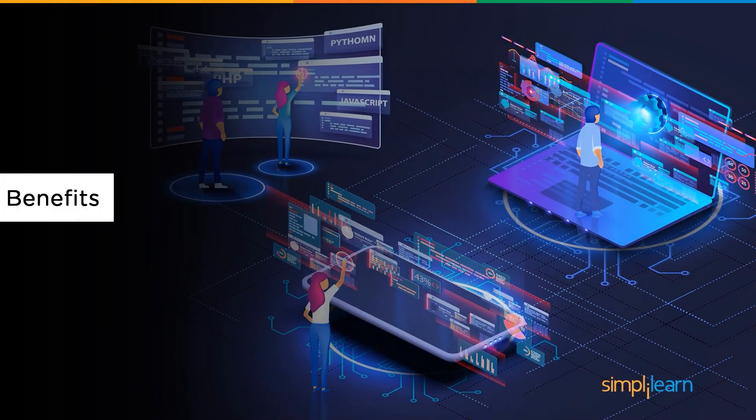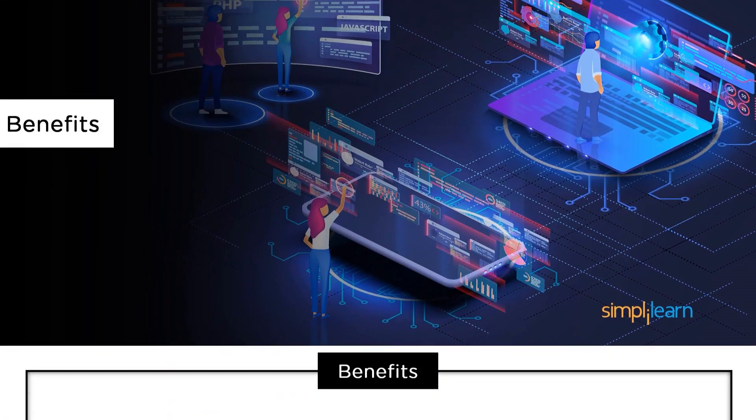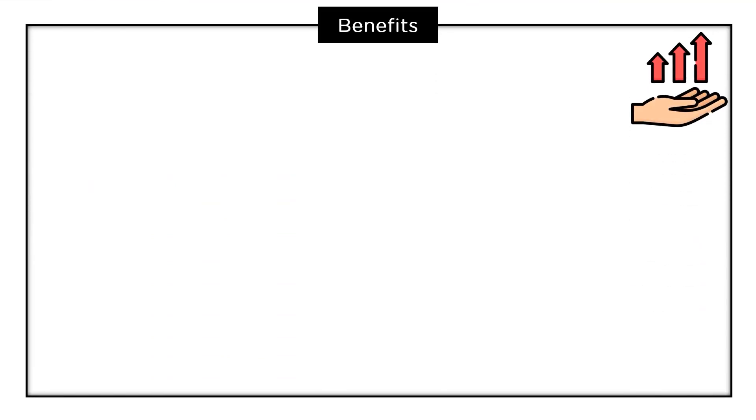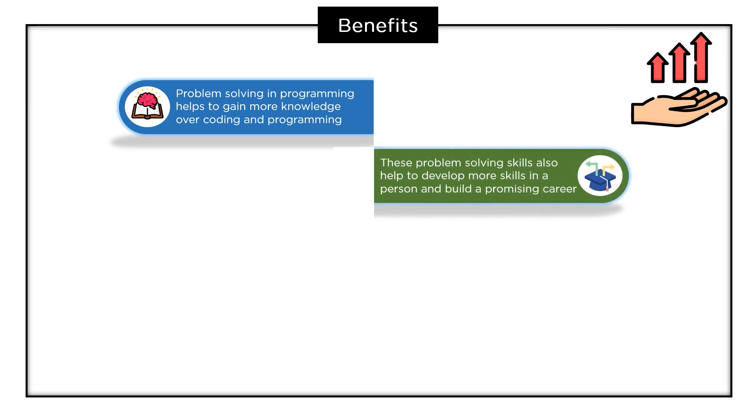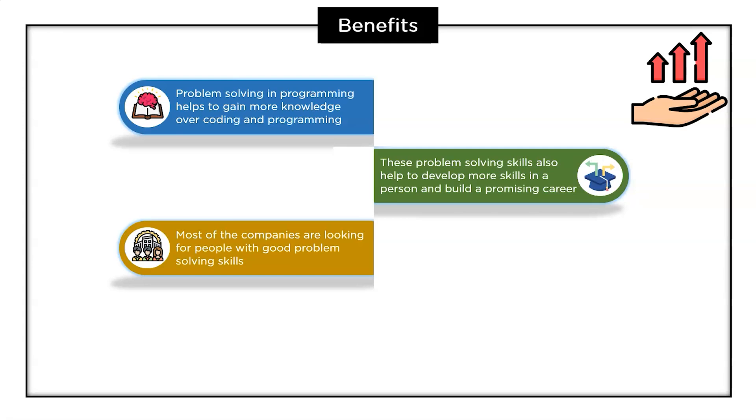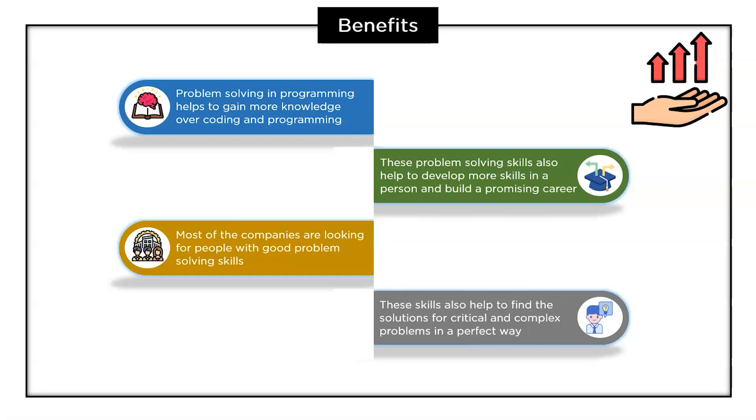So these were some of the important steps to improve problem solving skills in programming. Now let's learn about some important benefits of problem solving and programming. The major benefit of problem solving is to gain more knowledge over coding and programming. These problem solving techniques and skills also improve knowledge and build a promising career. These skills play an important role when it comes to jobs. Most companies are looking for people with good problem solving skills and these play an important role when it comes to job opportunities. These skills also help to find solutions for critical and complex problems in a perfect way.